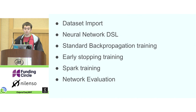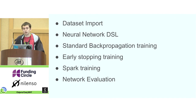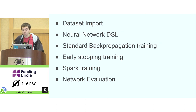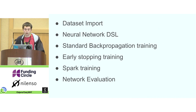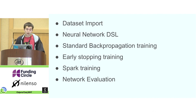The library has data set imports — no data manipulation since we'd use Clojure for that. We have the neural network DSL with all the predefined layers that DL4J defines for us. We can train networks using standard backpropagation, and we also have early stopping training where we can control under what conditions we exit training. We can also do distributed training using Spark, and we have network evaluations to figure out how well our model is doing.